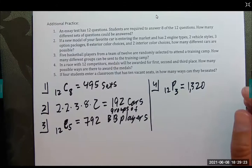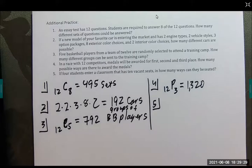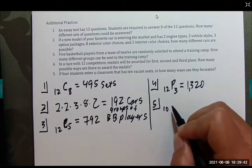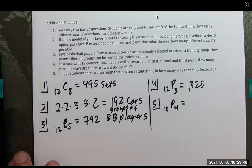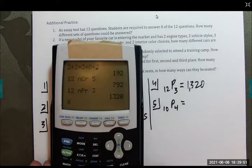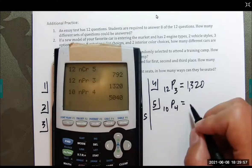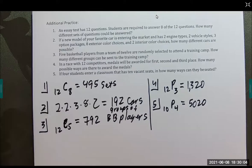Number 5: if four students enter a classroom that has 10 vacant seats, how many ways can they be seated? The order does matter — sitting on my left versus my right is a different seating arrangement. So this is 10 permutation 4, giving the number of ways they can be seated.